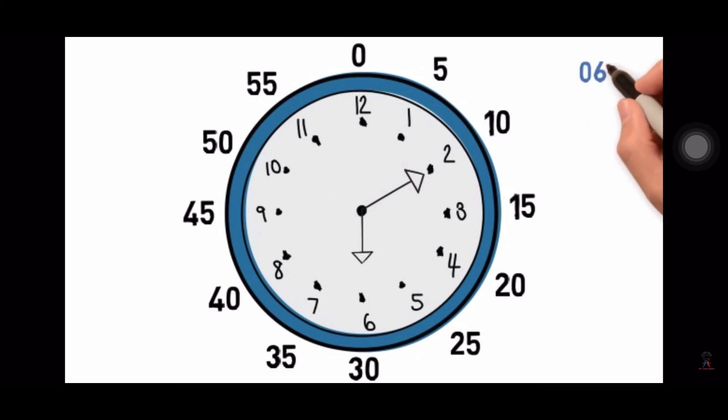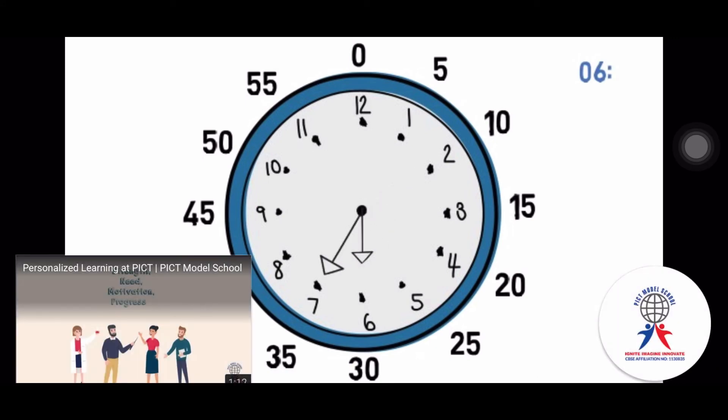Shorthand is at 6, longhand is at 2. So it is 6:10. This is 6:35.